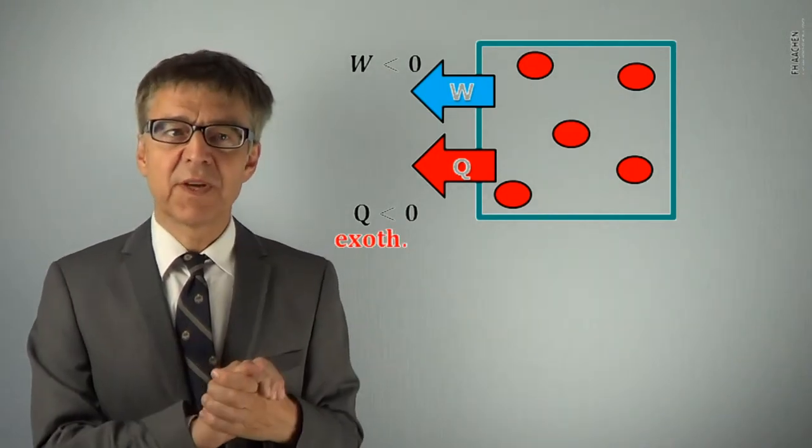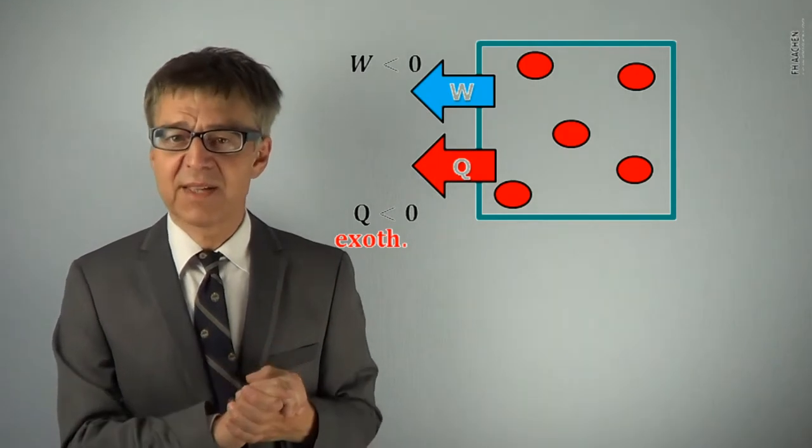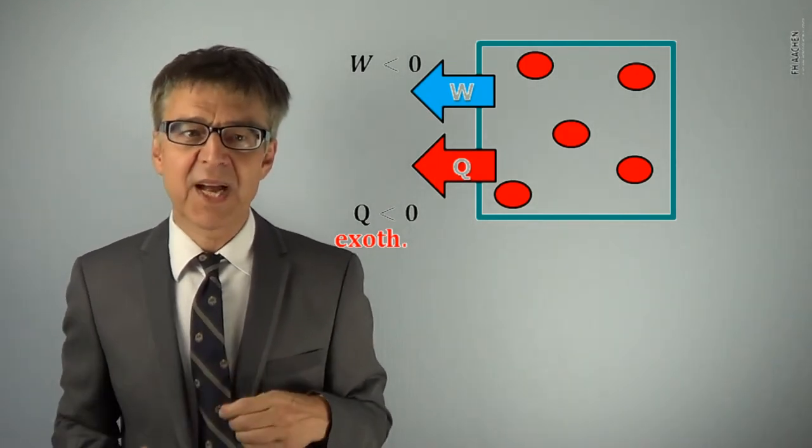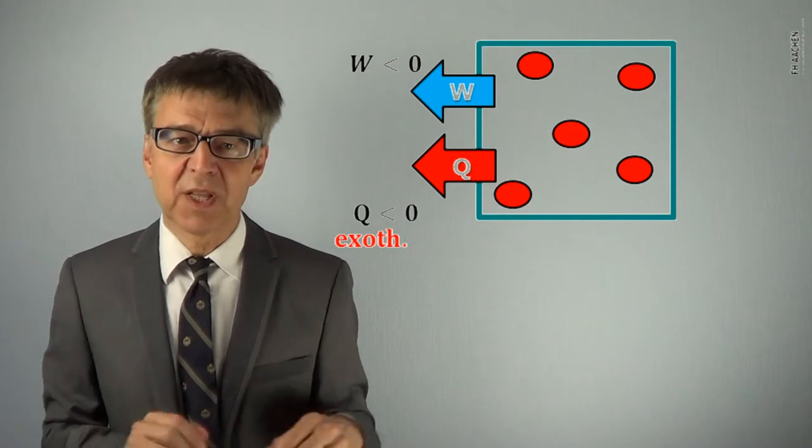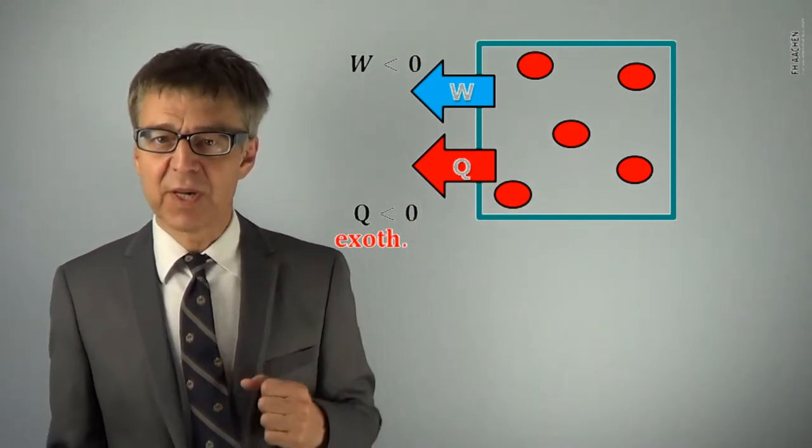This sign convention correlates with the requirement that the changes of state variables, the delta-z's, state values must always be calculated as a difference between final state values minus initial state values.